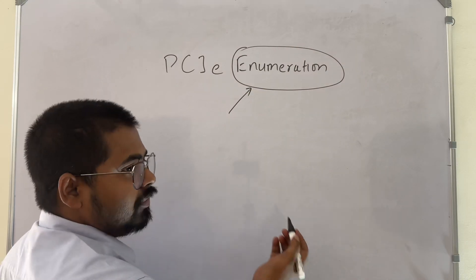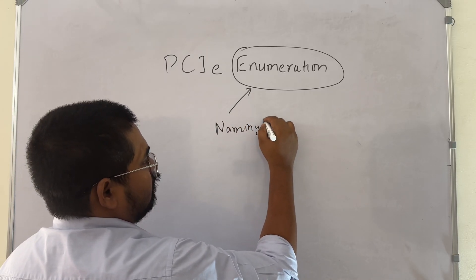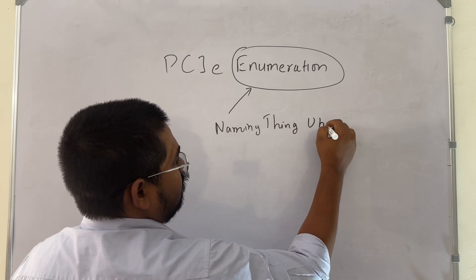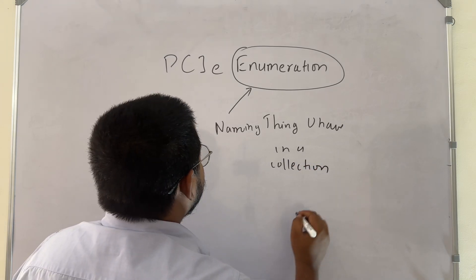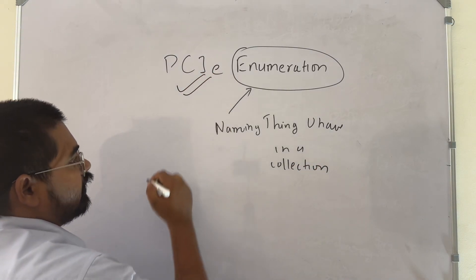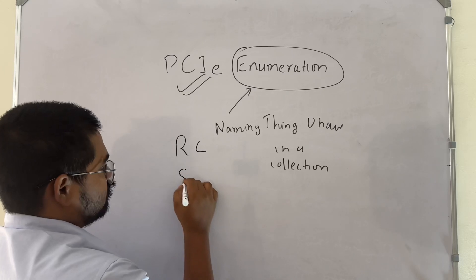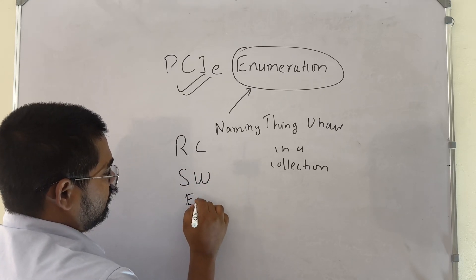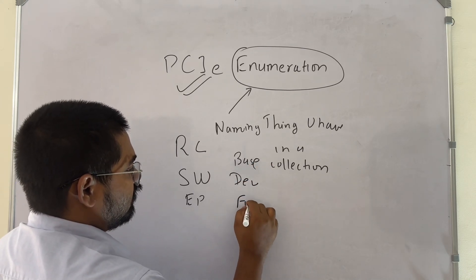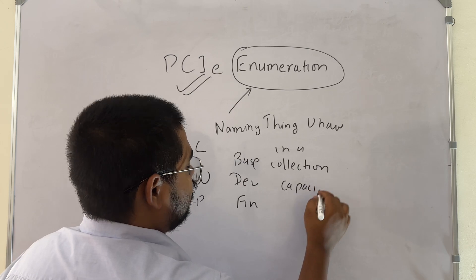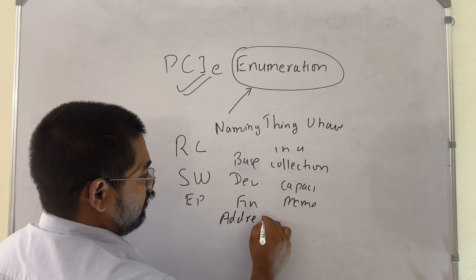What is the meaning of enumeration? This means naming things or listing things you have in a collection. So what is the meaning of PCI enumeration then? What are the things we have in PCI Express? We can have the root complex, switch, endpoint, different buses, devices, functions, capabilities, memory size requirements, and address spacing.